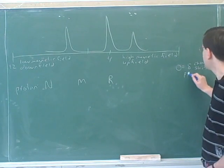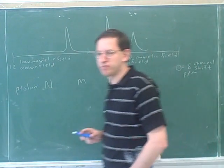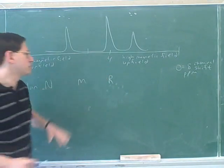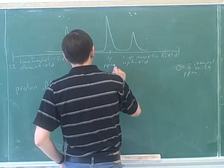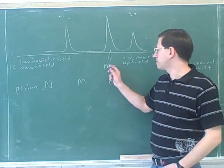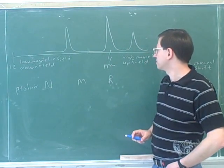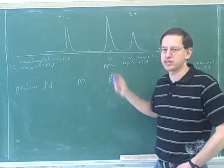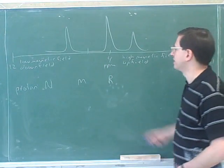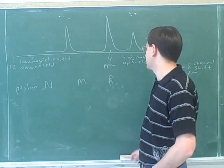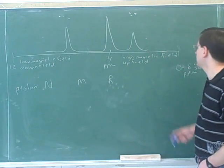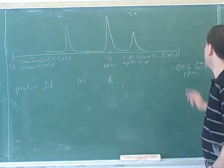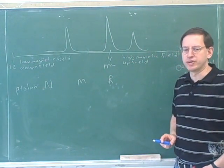The units for the delta are ppm, which is parts per million. For example, this would be 4 ppm, which is 4 parts per million. There's a way to explain why those are reasonable units, but that's probably not the best use of our time for a crash course in NMR. The main thing we want to know is how to use this to deduce structure. Chemical shift increases from right to left. The symbol is delta, and the units are ppm, for parts per million.